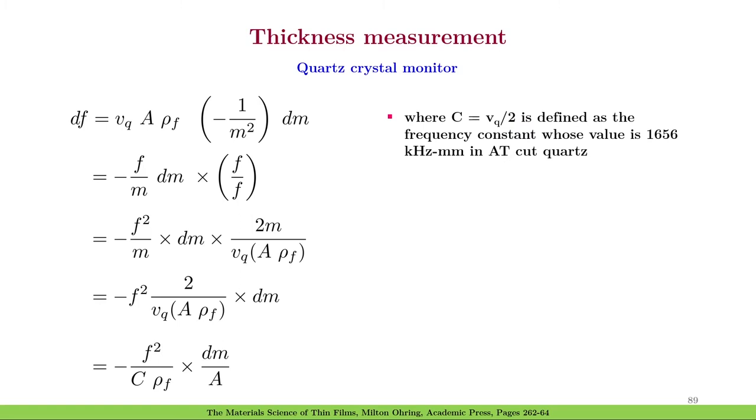We will introduce a constant c which is equal to vq divided by 2 and this is defined as the frequency constant whose value is 1656 kilohertz millimeter in AT cut quartz. So the final expression becomes df equal to minus f square divided by c ρf times dm over A.